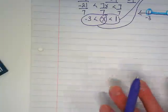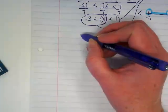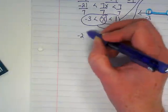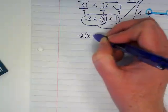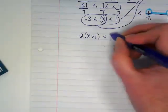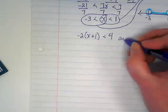Please write down negative 2 multiplied by x plus 1 is less than 4. Oh, this one's a little bit different. And...